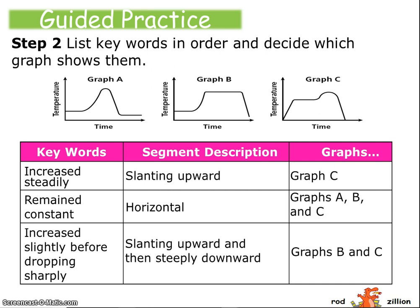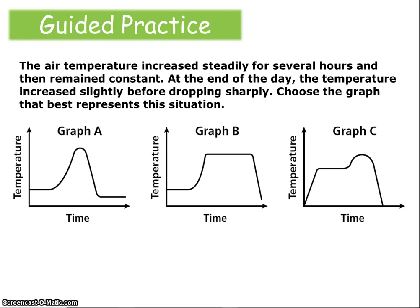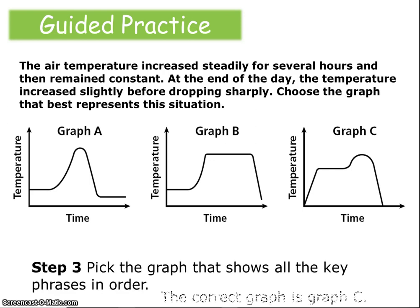Graph C shows the slanting upward only. Graphs A, B, and C have the horizontal part. And graphs B and C have the slanting upward and then steeply downward. Consequently, our answer should be graph C. Were you correct?